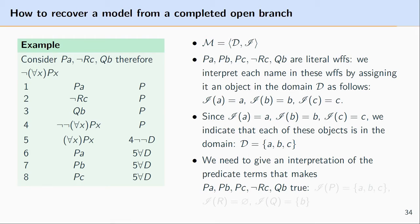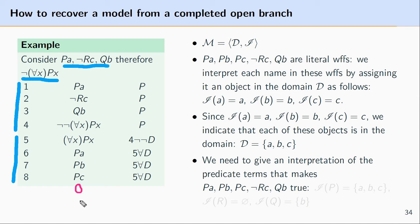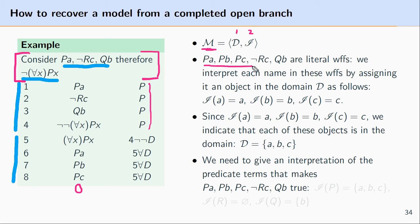So now let's put all this together and look at a concrete example. Suppose we have done the work of translating our English argument into predicate logic and we have something like: PA, not RC, QB, therefore not-∀x(Px). We put that into the truth tree, decompose all the formulas, and find that we have a truth tree with one completed open branch. This indicates we can construct a model that would make all these particular formulas true — in other words, it would make this particular argument invalid. Now, listing out all the literal well-formed formulas, we have: PA, RC, QB, PA, PB, and PC.